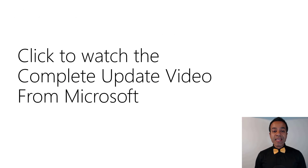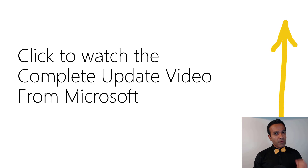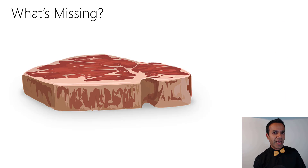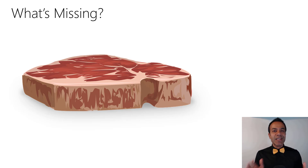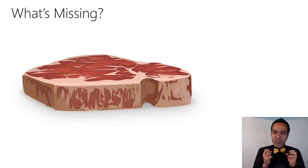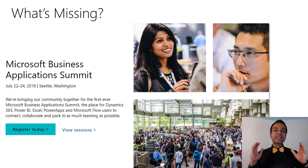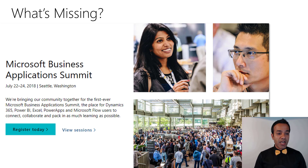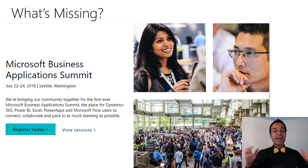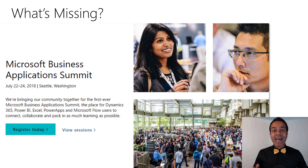There's also a bunch of updates in data connectivity — if you're using any of those connectors you're in luck. You can click to watch the complete update video from Microsoft. But here's the biggest news: what's missing. There's no eye-popping features, no big headline announcement in this June update. And that's because this is the calm before the storm — the Microsoft Power BI Summit is just around the corner, July 22nd through 24th, and the team is clearly saving up for that.